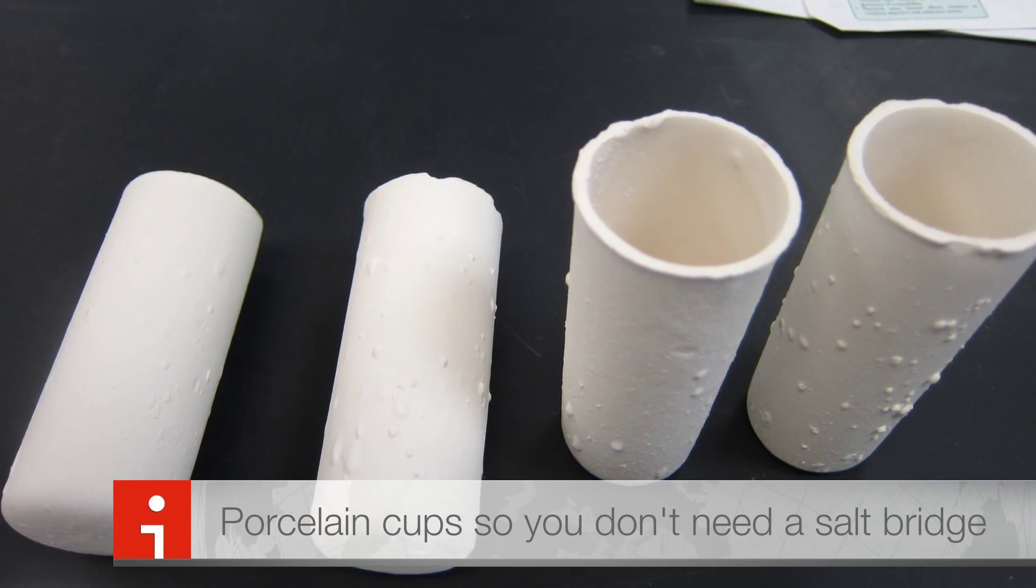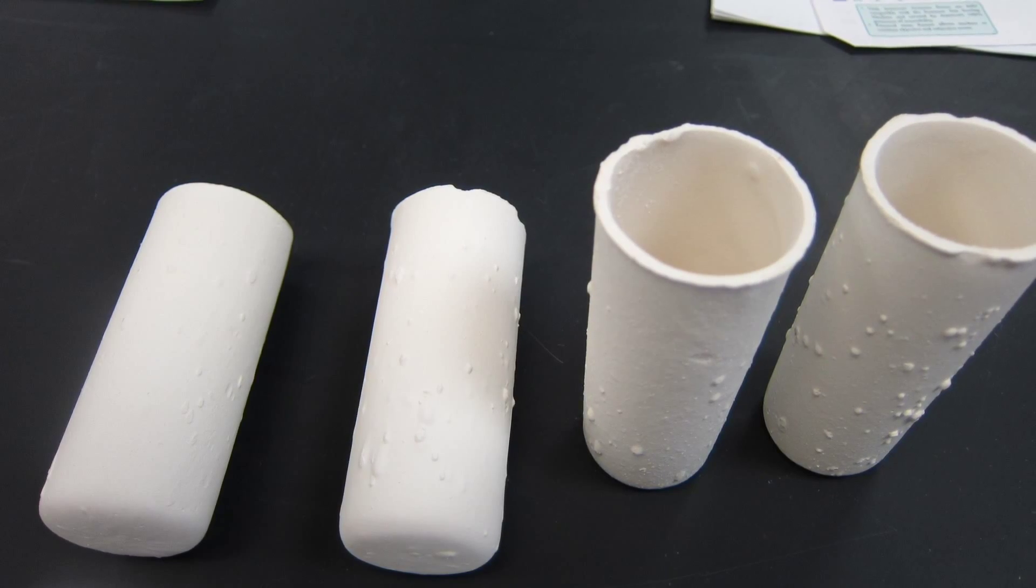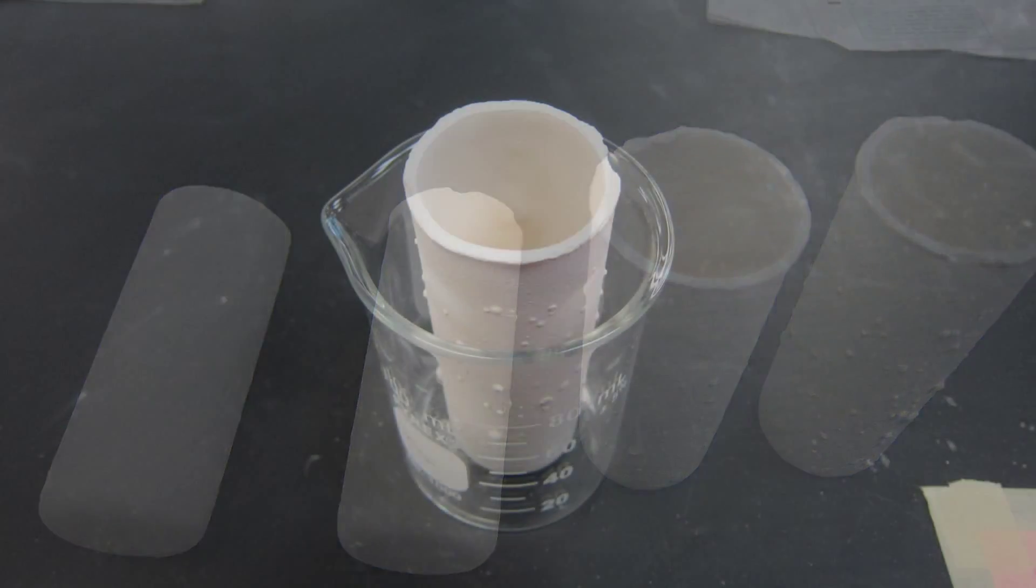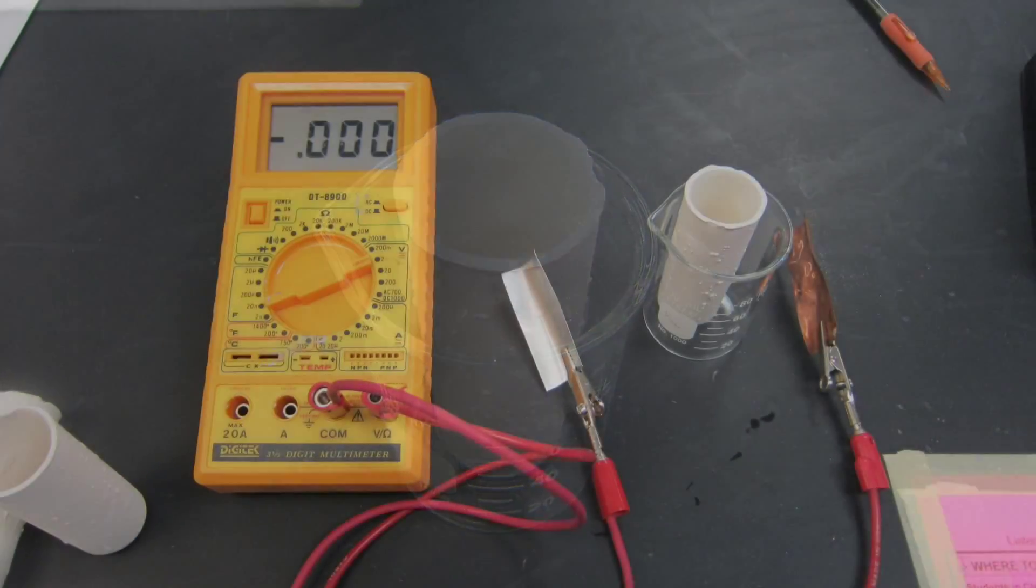The next thing that you will need is porcelain cups. We are not going to use a salt bridge. Instead, we will use the porcelain cup to set up the anode and the cathode will be placed in the beaker.